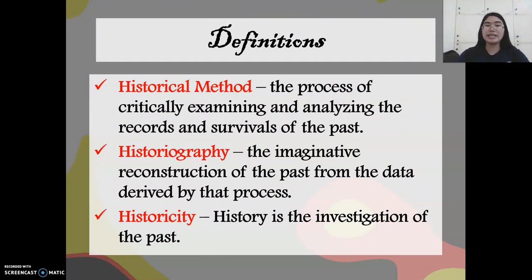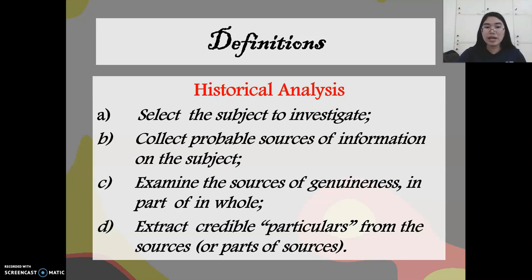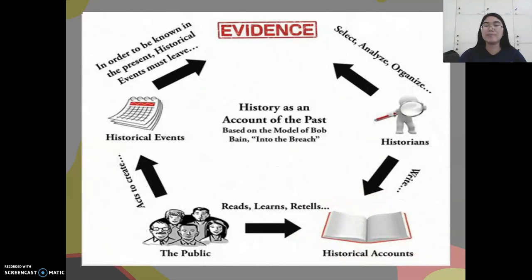We have historical method — the process of critically examining and analyzing the records of the past. Historiography is the imaginative reconstruction of the past from the data derived by that process; it is writing about the historical event. And historicity is the investigation of the past. The steps in historical analysis are: first, select the subject to investigate; collect probable sources of information on the subject; examine the sources for genuineness and authenticity; and extract credible particulars from the sources. Historians gather authentic, reliable evidence and extract from the most credible parts to explain a specific historical event. The process involves: select, analyze, organize, and eventually write the gathered evidence.